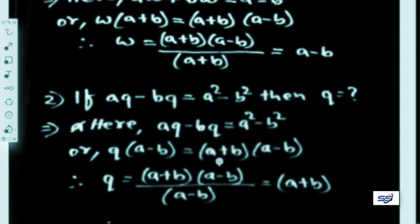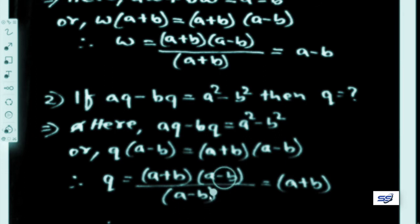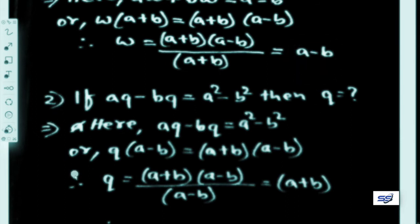The right side a squared minus b squared is expanded as (a plus b)(a minus b) using the algebraic formula. So q equals (a plus b)(a minus b) divided by (a minus b). The (a minus b) terms cancel, giving q equals a plus b.